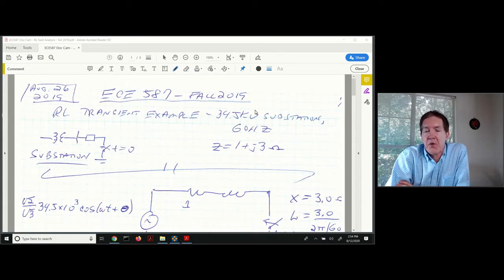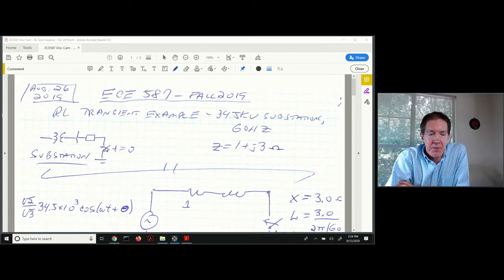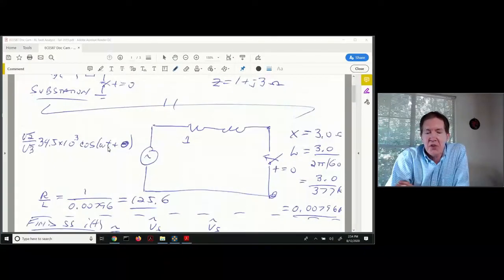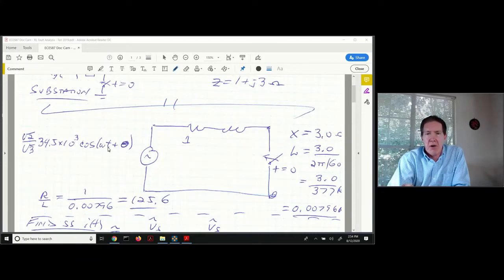We've got a 34.5 kV substation at 60 hertz. The equivalent impedance as seen by this fault is going to be 1 plus j3 ohms. We need to convert this over to its equivalent RL circuit.